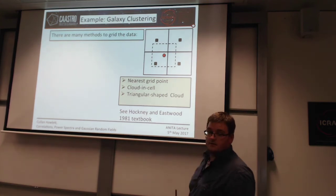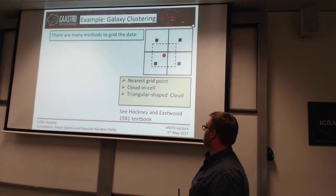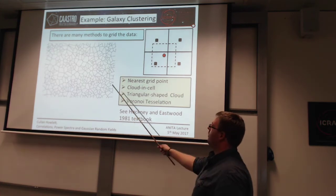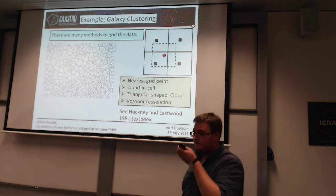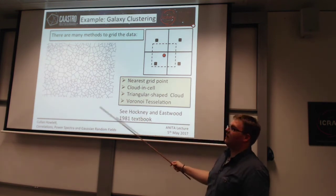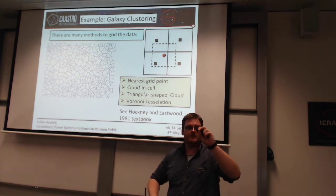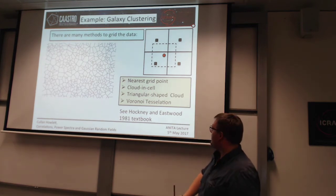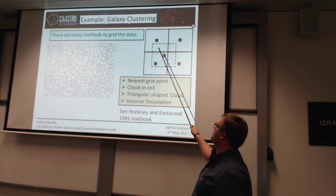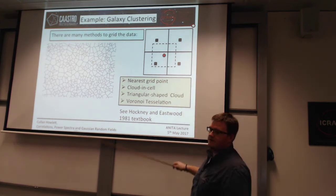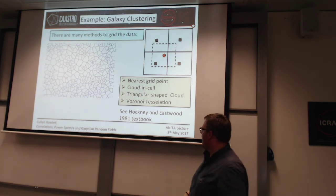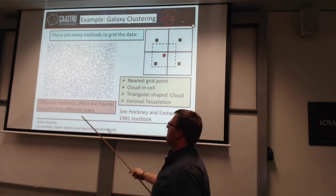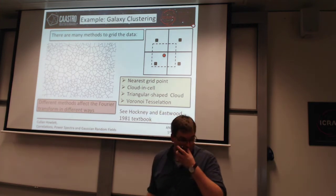Or you can be more sophisticated and use a Voronoi tessellation, which you might want if you've got lots of empty spaces in your grid, such that when you try to put the particles on the grid you're left with lots of empty cells. Different methods affect the Fourier transform in different ways.